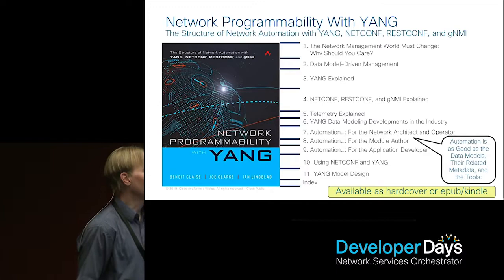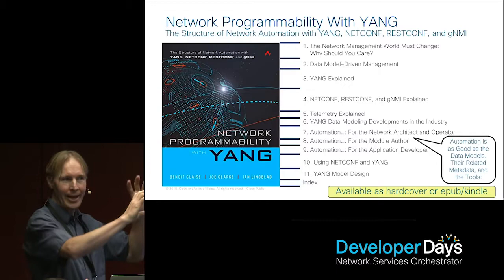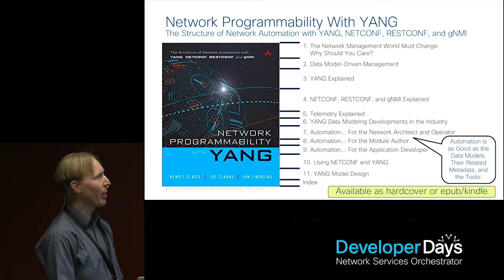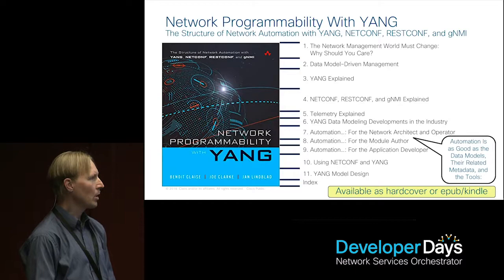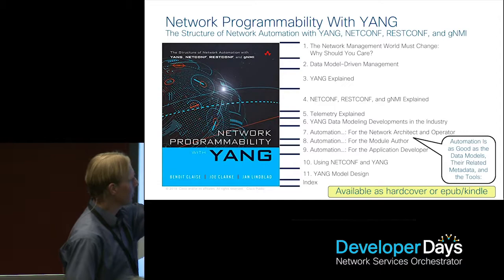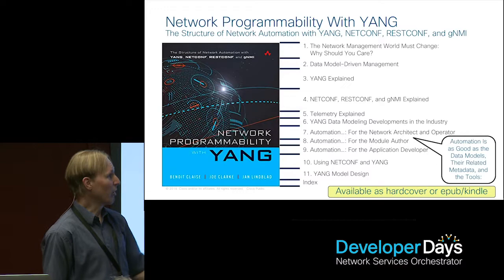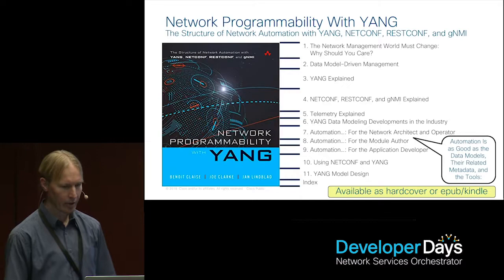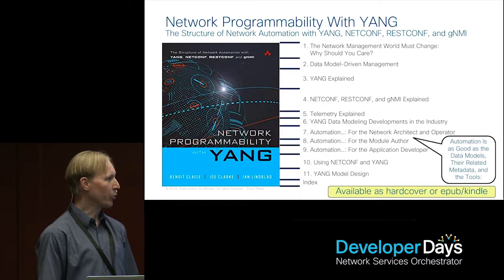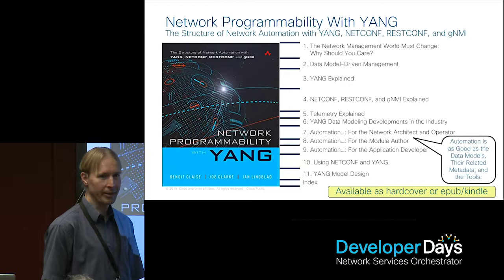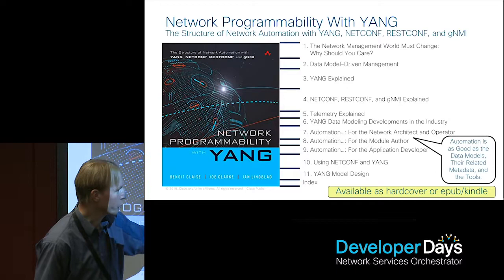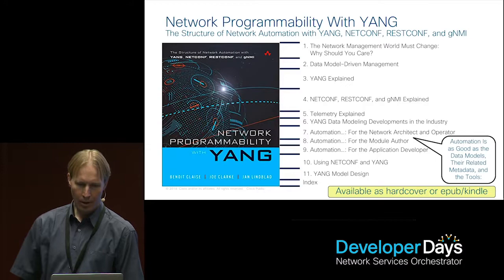This is what the book looks like if you take the pages and split them up. We talk about network management and why the world must change — this is the 'why.' What is NetConf and Yang trying to do for you? Then we talk about data model-driven management in general, which is the network programmability take. We spend a good amount of time explaining how Yang works with practical use cases. We have sections on NetConf, RestConf, and GNMI — originally three chapters but consolidated into one — explaining what these messages you send around are doing. And a small section on telemetry. We also discuss what other people are doing with Yang, especially in the standard bodies, and then some practical chapters. Automation is as good as the data models and their related metadata and tools for the network architect and operator.